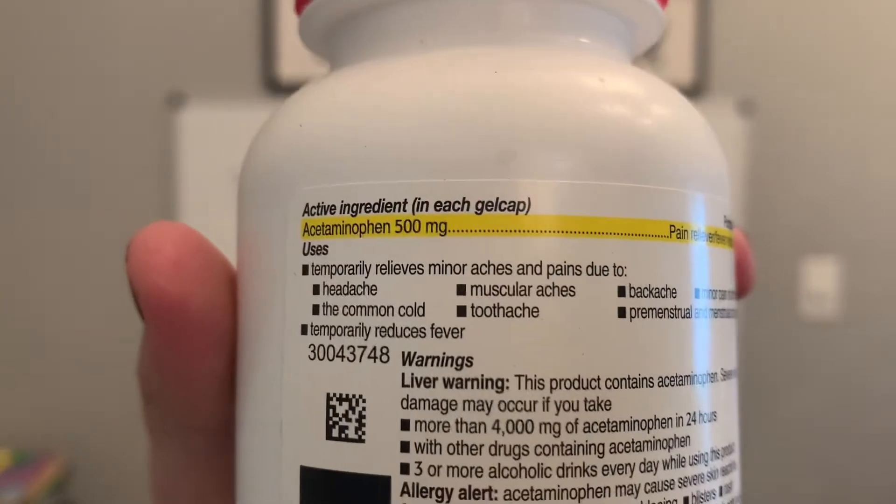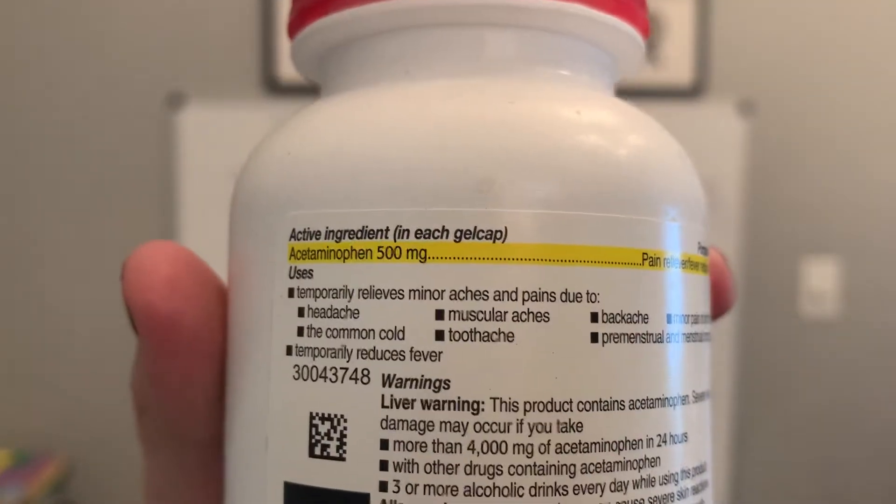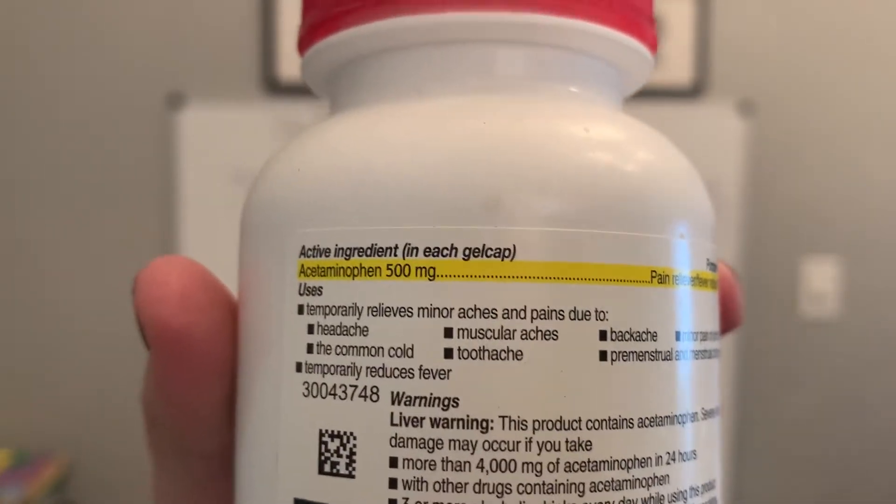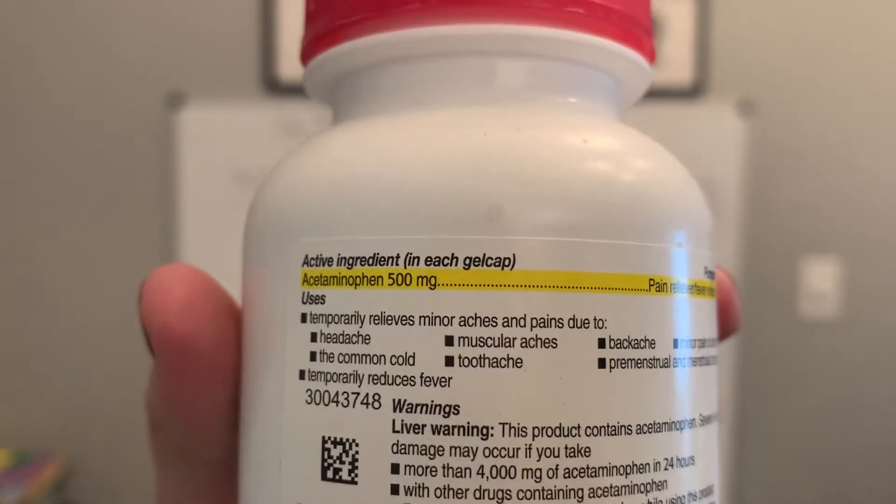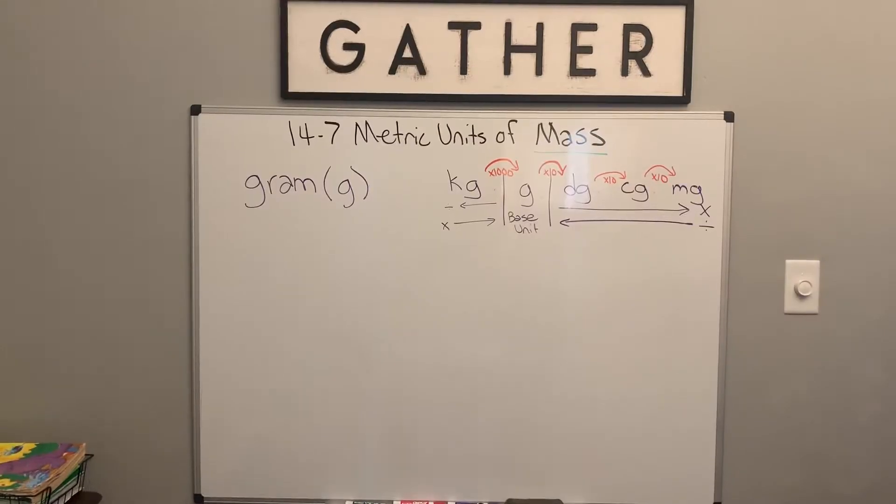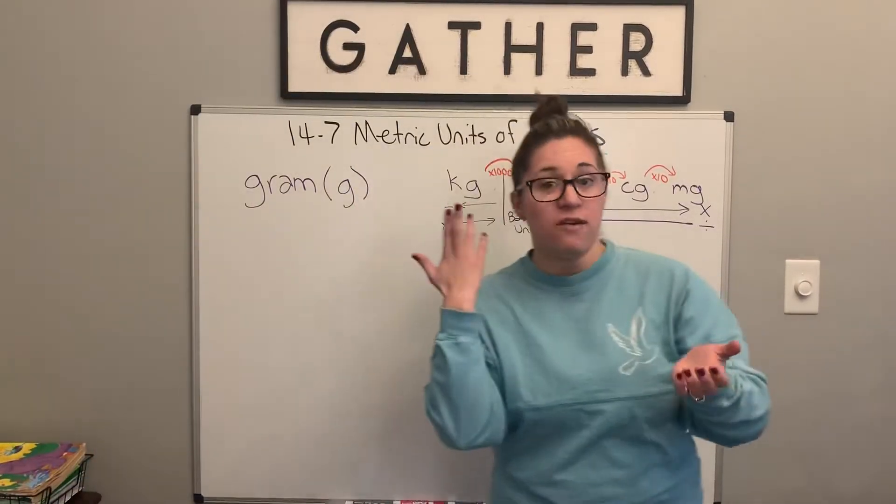So this is acetaminophen. This is just Tylenol, something you take for a headache, but you have 500 milligrams. So that's how something is measured as small as a little tiny pill that you might take if you have a headache.